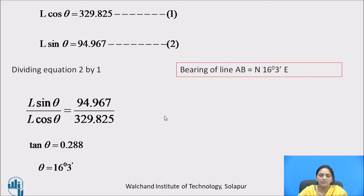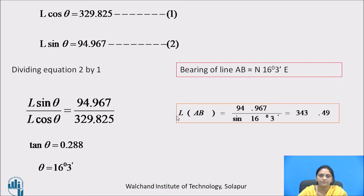Since it is in the north-east quadrant, the bearing of line AB is north 16 degree 3 minutes east. We will put theta in any one of the equations and determine the length. The length of line AB is 343.49 meters.